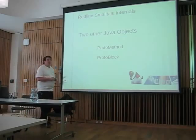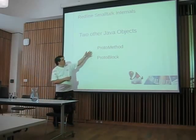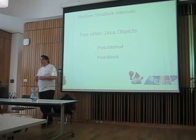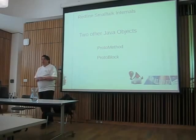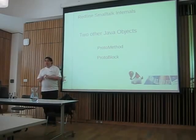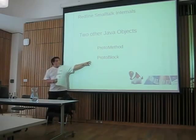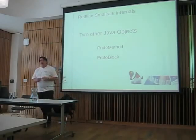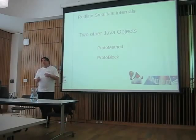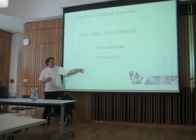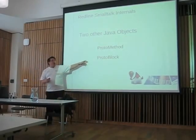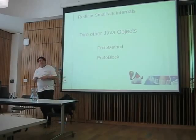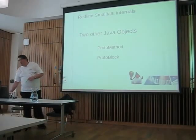There are two other partners in this: ProtoMethod, which is the base of all methods — methods in Redline are first-class objects, whereas they are not in Java — and ProtoBlock, which is the base of all blocks. These help most notably with stack traces: if a stack trace goes through a method, you know it's a method object that got upset; if it goes through a block, some code within the block got upset, as opposed to a ProtoObject, which could be anything.